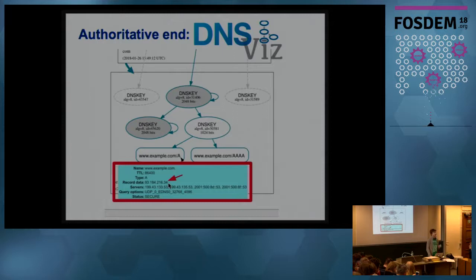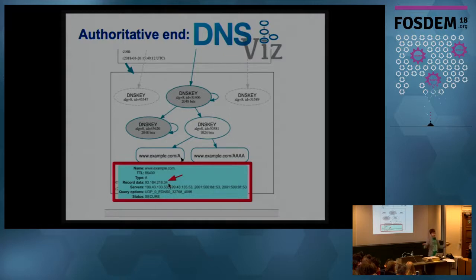Now we've covered the case when it's broken on the remote side — pick up the phone, call the domain owner if you can, and tell them to fix their stuff. If it's not broken on the remote side, then it's a bigger problem for us. The next step is to debug it locally. We have the value we want, and now we need to find out why it didn't arrive.